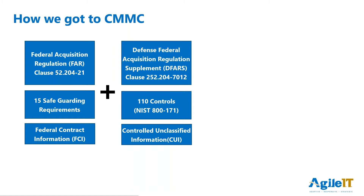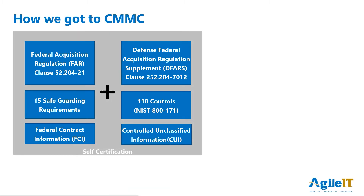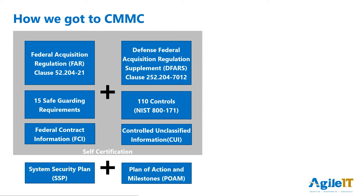DFARS-7012 required compliance with NIST 800-171, along with a couple of other controls, in order to protect controlled unclassified information. The problem with both of these is that there is no certifying body, and the government just has to trust that contractors are actually reading their contracts and following the rules. Contractors show their compliance with system security plans and plans of actions and mitigations — SSPs and POAMs.